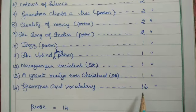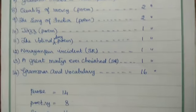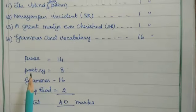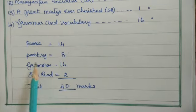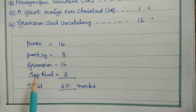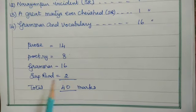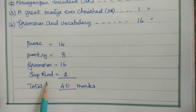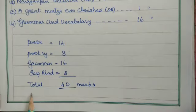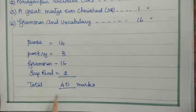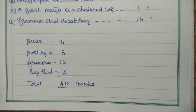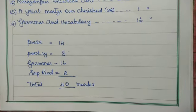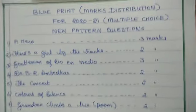Grammar and Vocabulary — 16 marks. So the total: for prose it is 14 marks, Poetry 8 marks, Grammar 16 marks, and Supplementary Reading just 2 marks. The total is 40 marks overall for the new pattern questions, 2021 multiple choice.